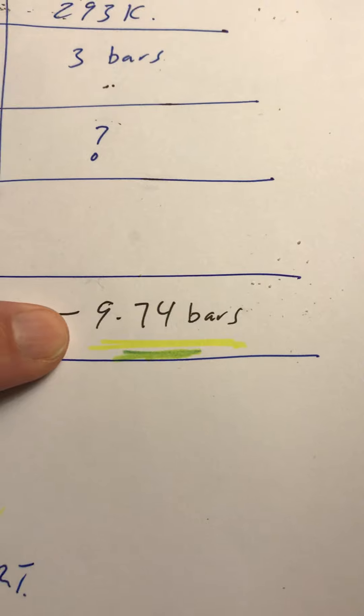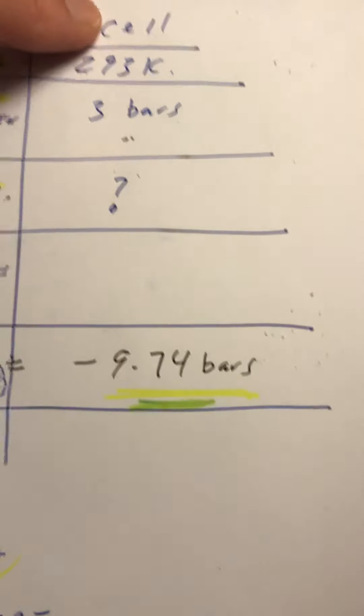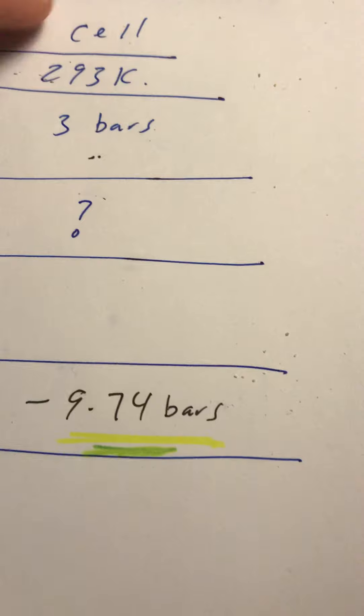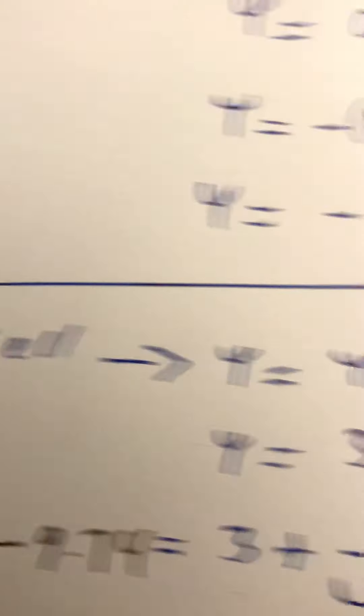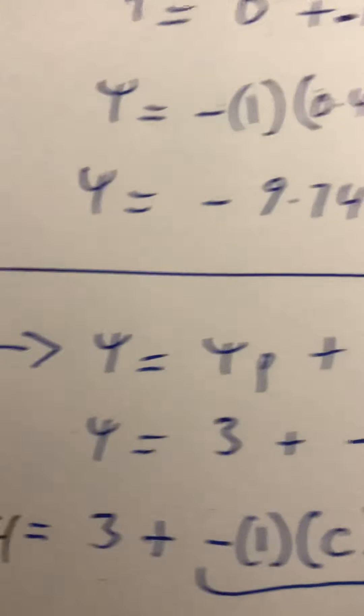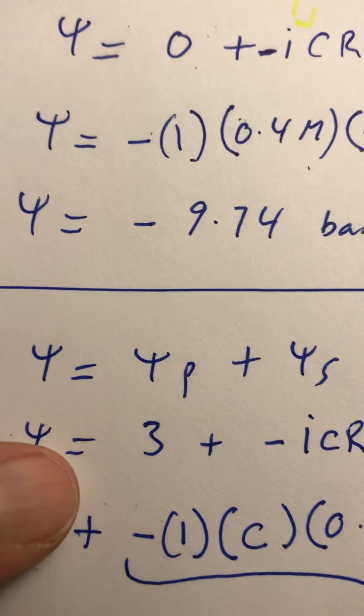Now I can use this number, negative 9.74, and work my equation for the cell. I have three variables, I can figure out the other. I go back to the cell and say psi equals psi P plus psi S.